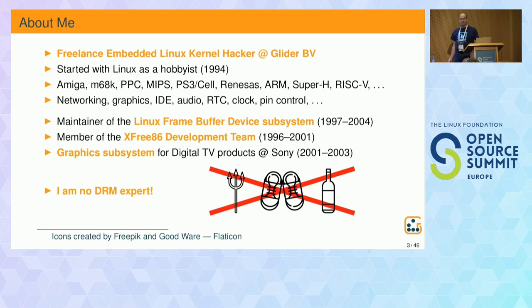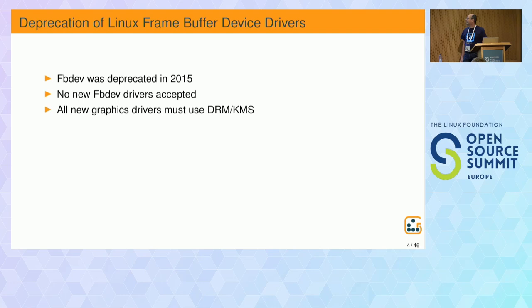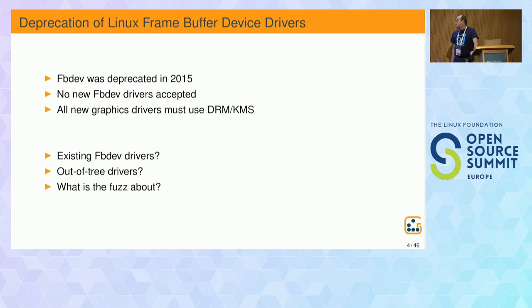Big fat warning: I'm no DRM expert, so please don't throw any objects at me during or after the presentation. So what will this be about? The Linux framebuffer device subsystem was officially deprecated in 2015. That means no new drivers for the subsystem are accepted and all new graphics drivers must use the newer DRM KMS subsystem. We have plenty of old FBdev drivers left — what will we do with them? What can we do about it and what's the path to the future?